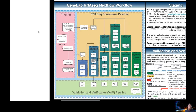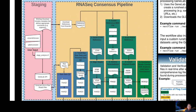A high-level overview of the consensus pipeline itself is as follows. First, we take our raw FASTQ files and generate QC reports. Next, we perform adapter and quality trimming, as well as generating associated QC reports for those trimmed reads. The STAR index is then built and used to align the trimmed reads to the genome. Before we quantify gene expression, we infer the strandedness of the original library using RSeQC.